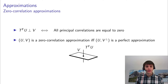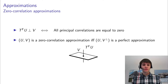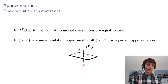then (U, V perp) — which is basically replacing V by its orthogonal complement — is going to be a perfect approximation. So this is clear if you look at this figure: if you take the orthogonal complement of the plane V here, that's just a line parallel to T_f(U), so it's a perfect approximation. This is a very simple result,